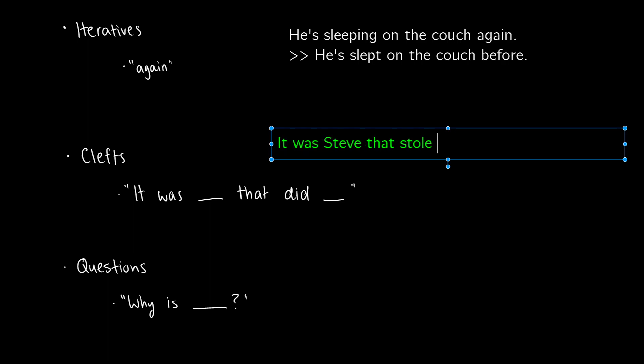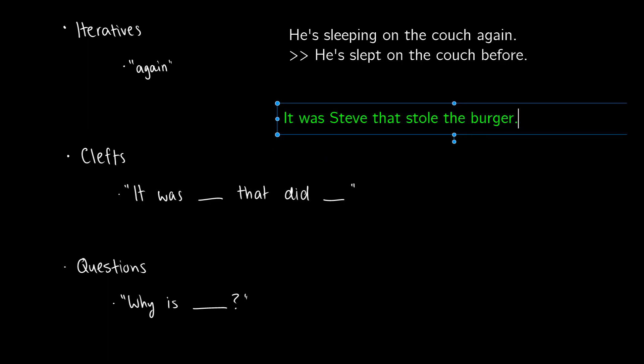'It was Steve that stole the burger' - there's an interesting presupposition that comes from this. When I say 'It was Steve that stole the burger', I'm saying the event happened but I'm claiming that Steve is the one who stole the burger. The actual presupposition here is that someone stole the burger, and the cleft construction is just pointing out the person that did it.